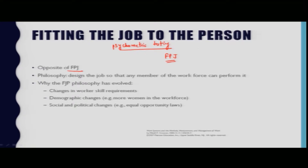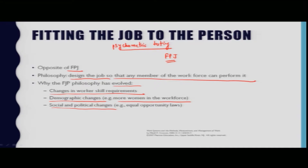Fitting the job to the person (FJP) is a philosophy that designs the job so that any member of the workforce can perform it. The FJP philosophy evolved due to changes in worker skill requirements, demographic changes such as more women in the workforce, and social and political changes including equal opportunity laws. The ergonomic approach is diametrically opposite to FPJ, designing the job so that nearly any member of the workforce can perform it.